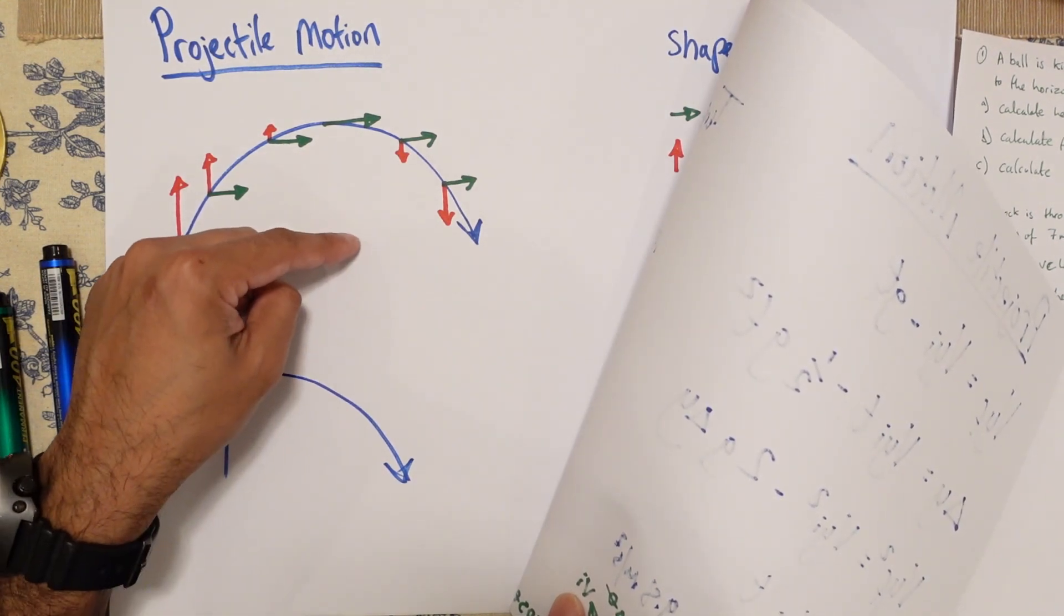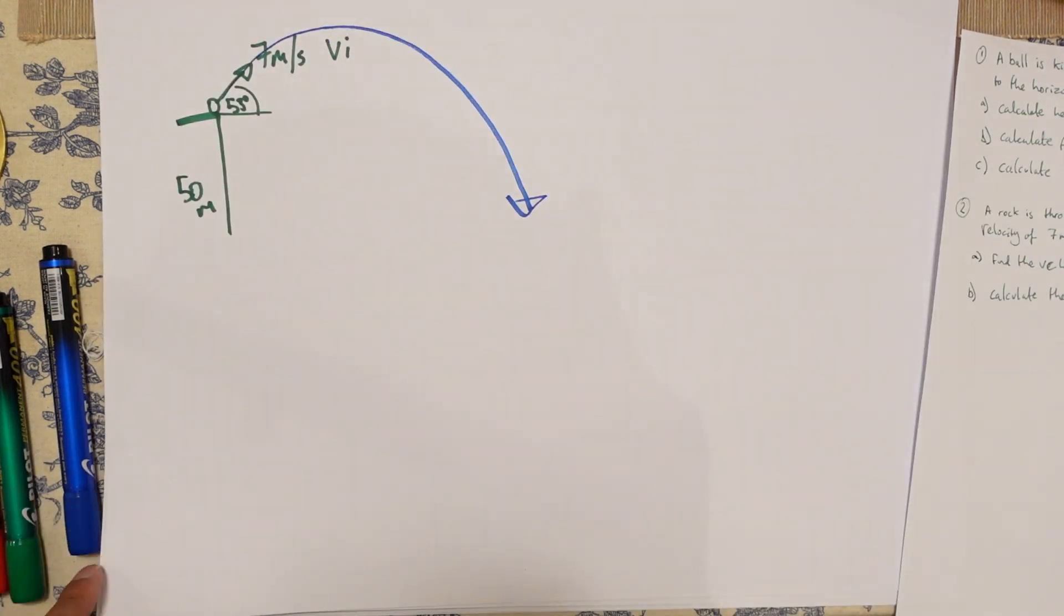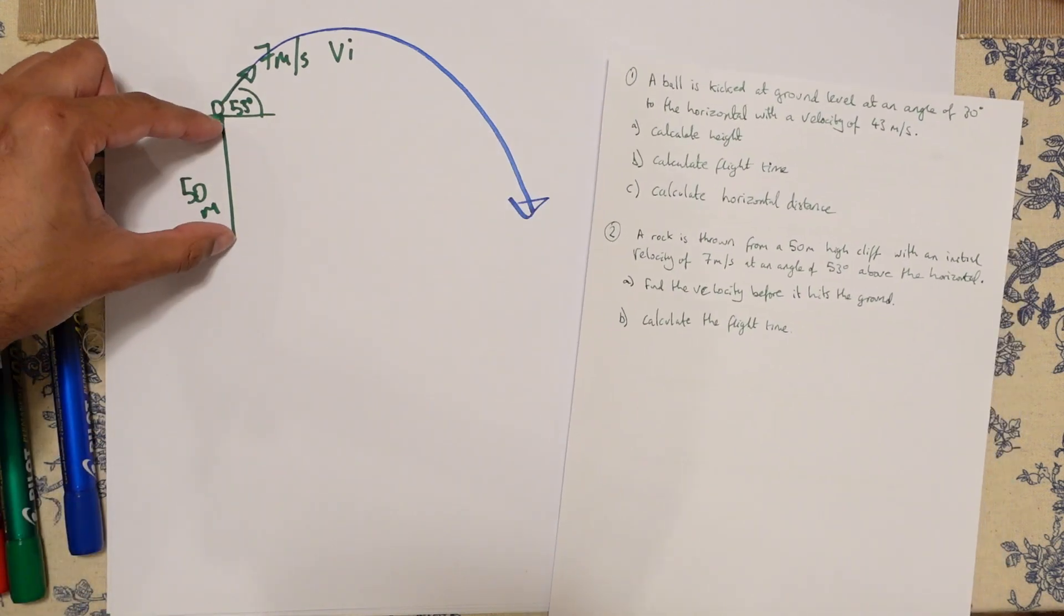So it stops, starts to go down. So zero at the very top. And that's super important. Calculate the height. Now I've already got a 50 here, but we can calculate this bit separately.